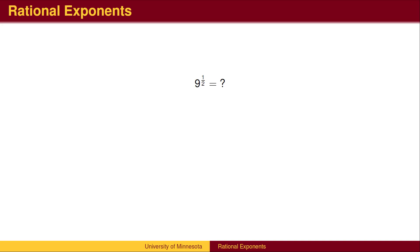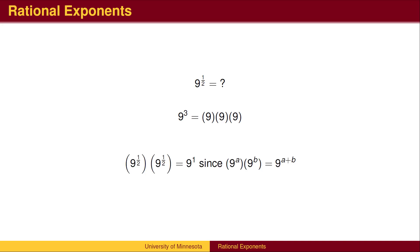Can we make sense of an expression like 9 to the 1 half power? We know what it means when the exponent is an integer — 9 to the 3rd power is 3 factors of 9 multiplied together. But what do we mean by half of a factor of 9? One approach is to collect enough factors and use the addition rule for exponents. Since two copies of 9 to the 1 half power multiply to make 9,